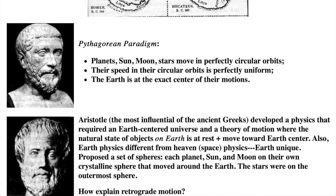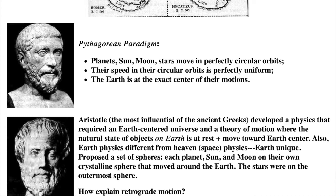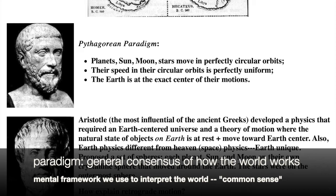The first person we come to in this quick overview is Pythagoras. He is the first one we know of who articulated some basic principles known as the Pythagorean paradigm. A paradigm is a general consensus of belief of how the world works. It is the mental framework we use to interpret what happens around us. It is what could be called common sense.